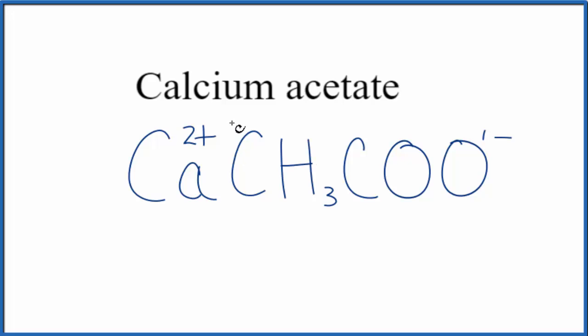So, to fix that, we could put parentheses around the acetate ion and put a 2. 2 times 1-, that's 2-, 2- and 2-plus, that gives us a net charge of zero.